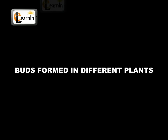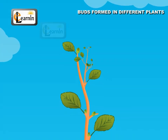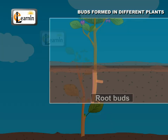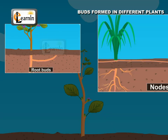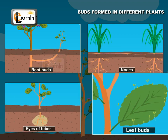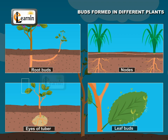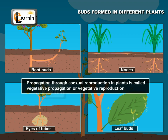Buds formed in different plants support vegetative reproduction. Vegetative propagation is routinely done and is preferred by many plants. Some flowering plants propagate by specialized structures. This method of reproduction is asexual reproduction, where there is no involvement of male and female gametes. This method of propagation in plants is called vegetative propagation or vegetative reproduction.